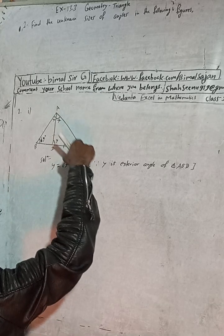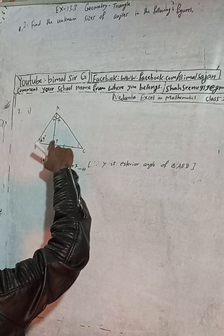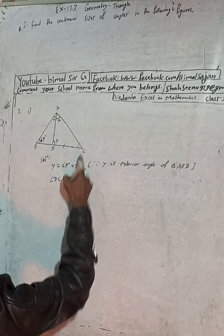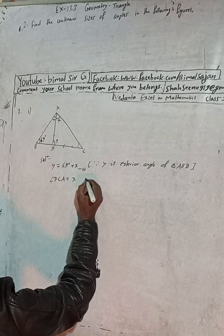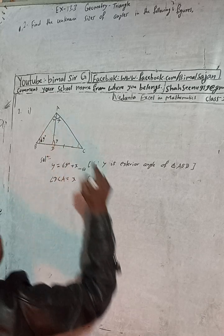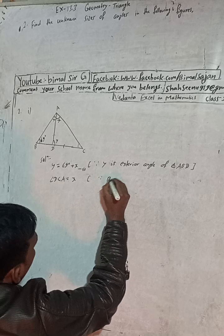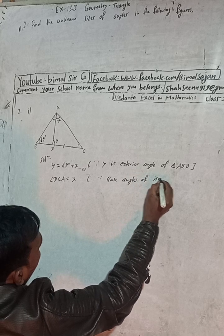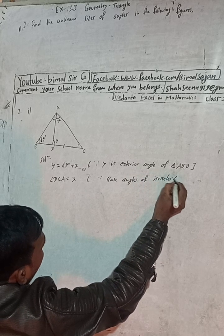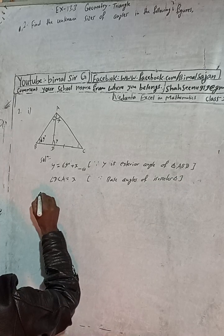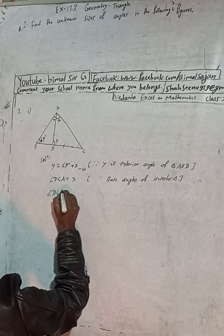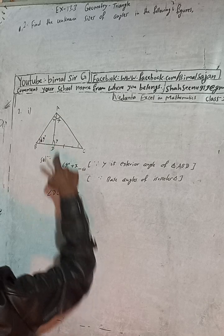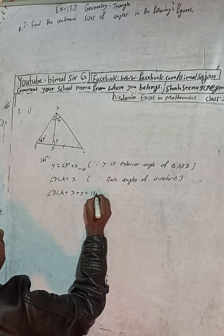Now I will write the relation between these angles. Angle DCA is equal to x. The reason is that base angles of an isosceles triangle are equal. Now we can write: angle DCA plus y plus y is equal to 180 degrees.